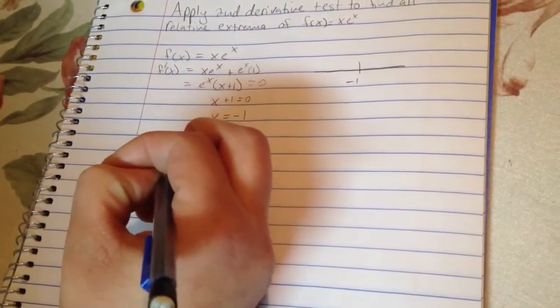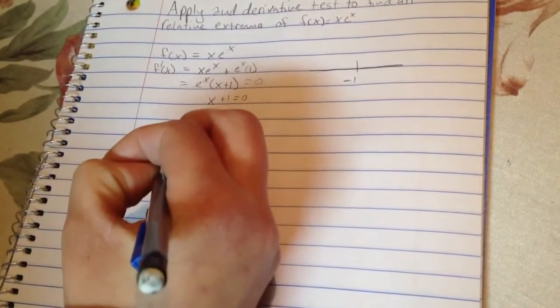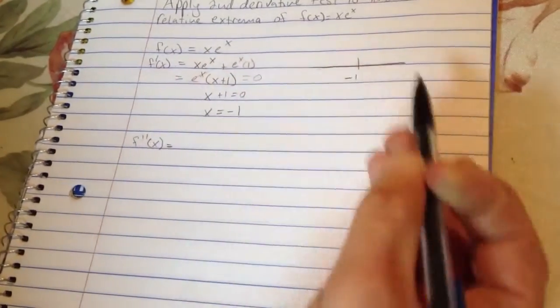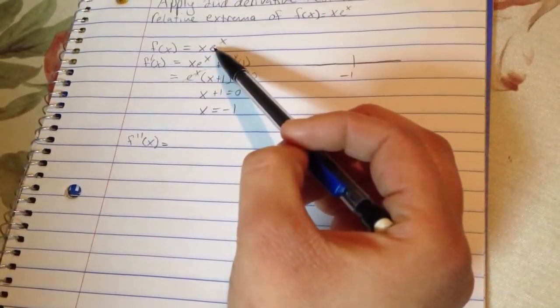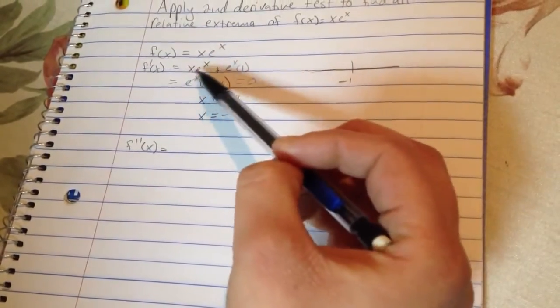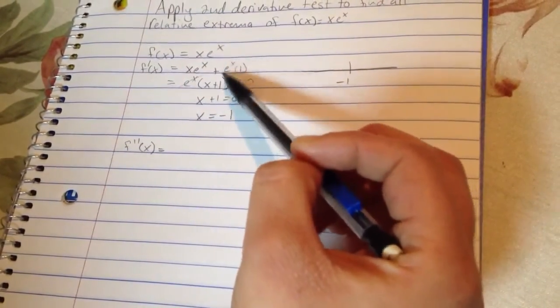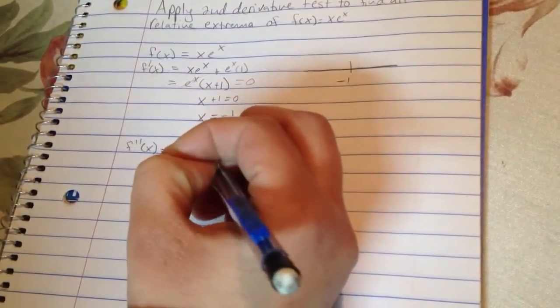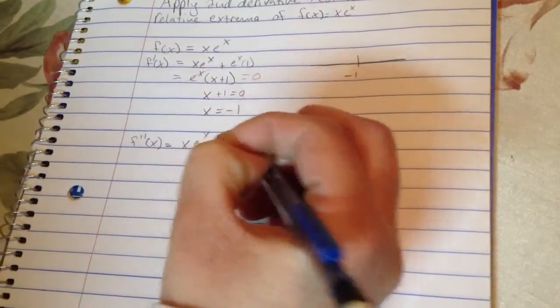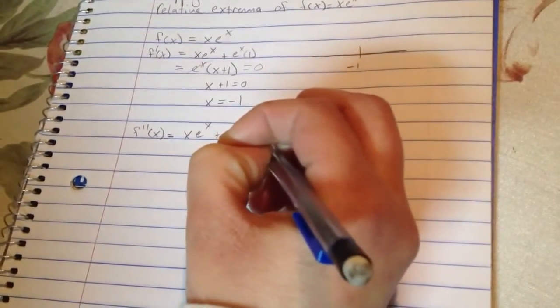So to solve for that, f double prime of x is equal to... And this is actually really kind of nice because you know that it's going to be the same as this here, then plus one more of these. So x, e to the x, plus e to the x, and then plus e to the x again.